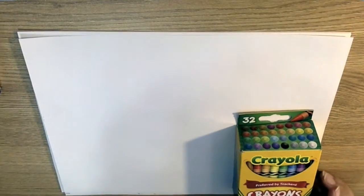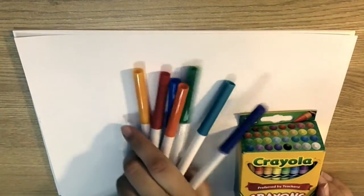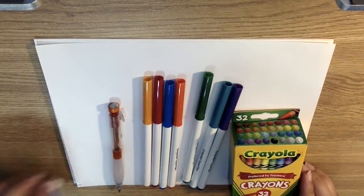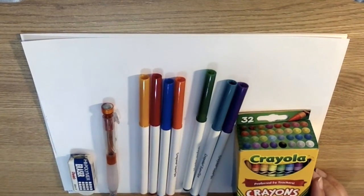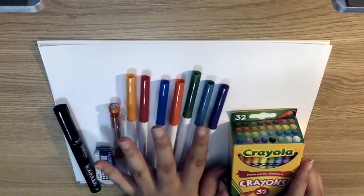Okay kinder class, so go ahead and start grabbing your materials. You'll need paper, you'll need your crayons, if you have markers you can use markers, pencil, and an eraser if you have one, and a black marker. For crayons and your markers, grab your colors of the rainbow.